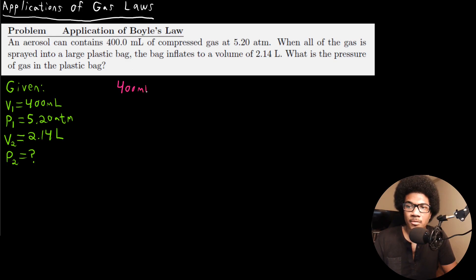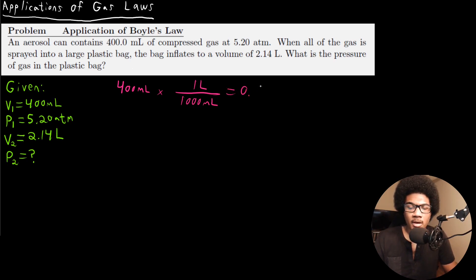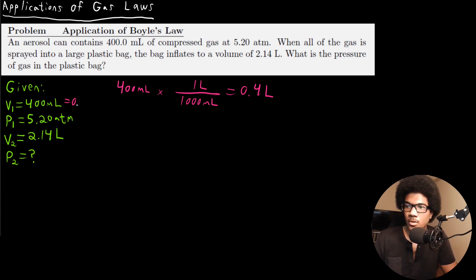We have 400 milliliters. We know that in one liter there are 1000 milliliters, so the milliliters cancel out, giving us a volume of 0.4 liters. So V1 in liters is 0.4 liters.